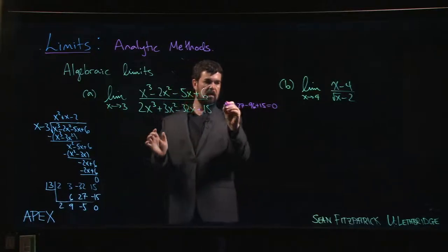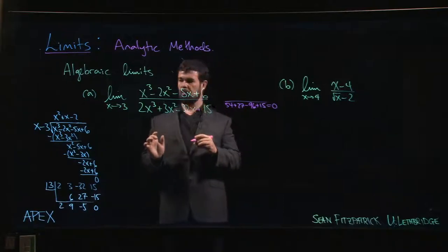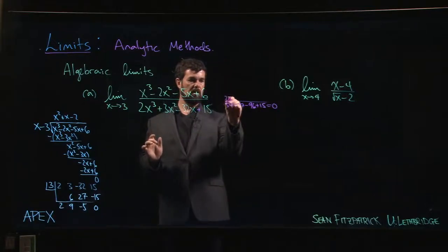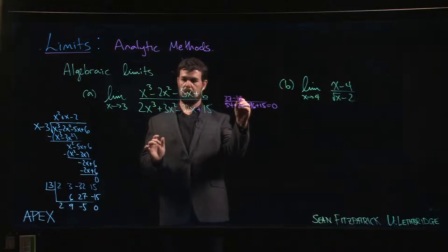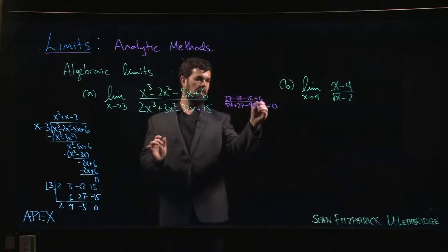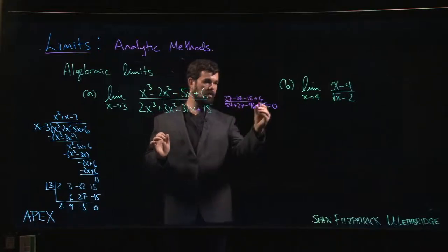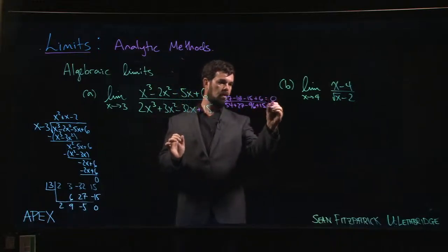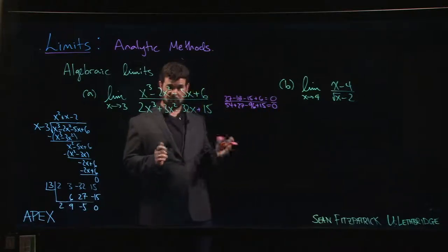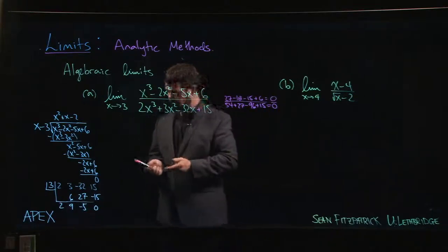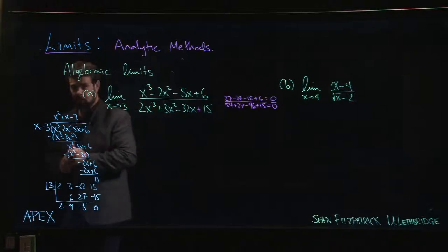So then you might check, well what about the numerator? Let's see, the numerator is 27 minus 18 minus 15 plus 6. The positives add to 33, the negatives add to minus 33, also zero. So we have this zero over zero type limit.